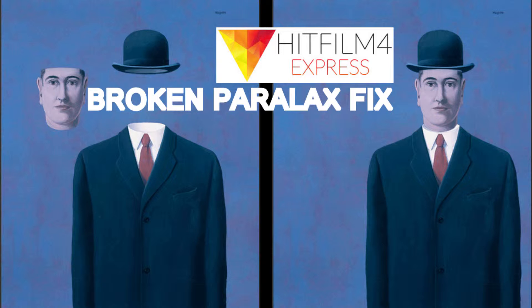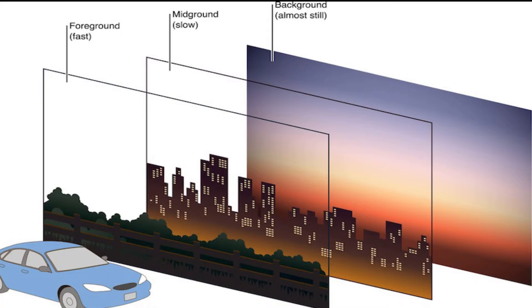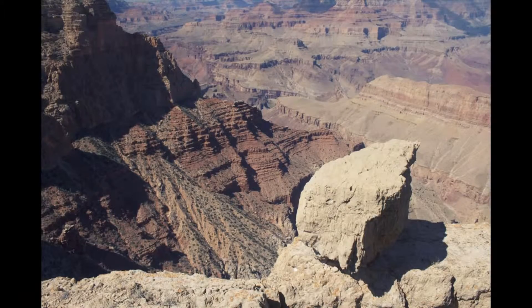If you're watching this video then you probably know what a parallax effect is. Basically, it's about dividing the image into multiple layers to create an illusion of movement and 3-dimensional depth on a still 2-dimensional image. However, in most of the tutorials the effect is applied to very structured, perpendicularly layered pictures with clear division between foreground, middle ground and background.